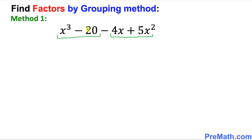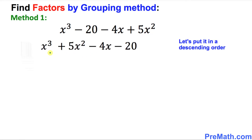We must put it in descending order — we must rearrange it. So here I rewrote it in descending order. That means the power goes from highest to lowest. The degree is 3 over here, then degree 2, degree 1, and the constant term.